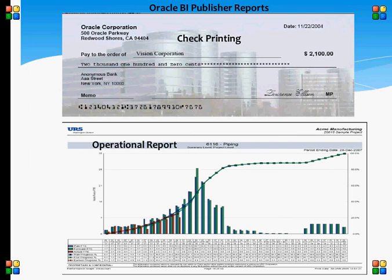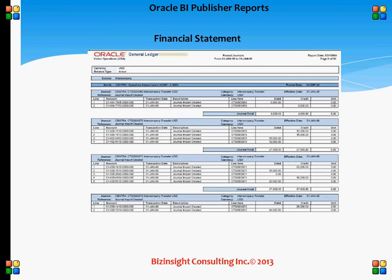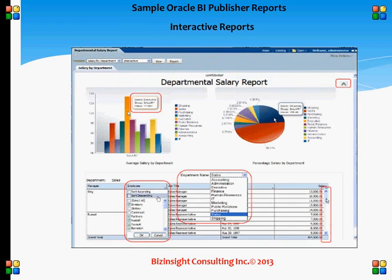Check printing is always a pain — the majority of customers use third-party software to print check reports. Another example is operations reports, which you can design in a very graphical manner. There is also the seeded journal report — if you run this report in Release 12.1.2.3 it looks a certain way, but if you want a customized layout, you build a BI Publisher layout and associate it with the existing concurrent program. Best of all are interactive reports, where you can build dashboard reports with graphs, charts, tables, and filters — for example, viewing salary by department or by designation.